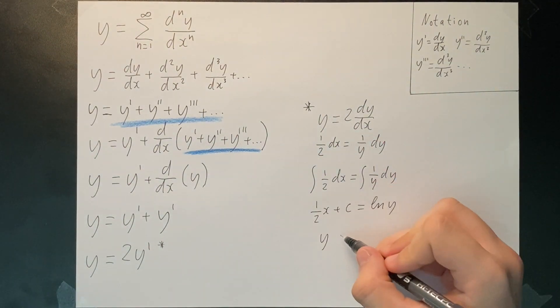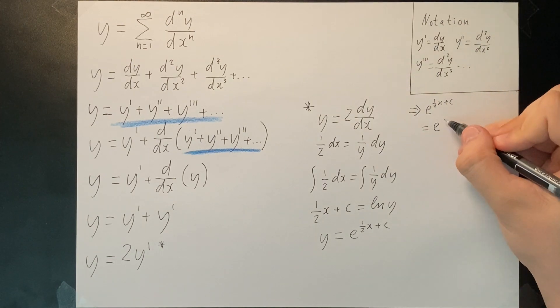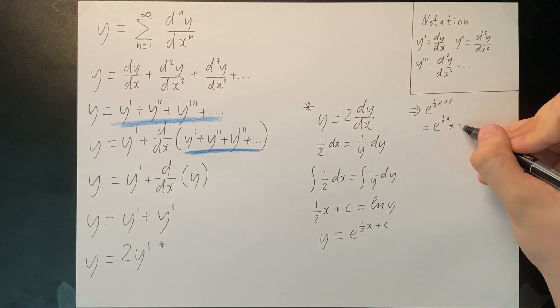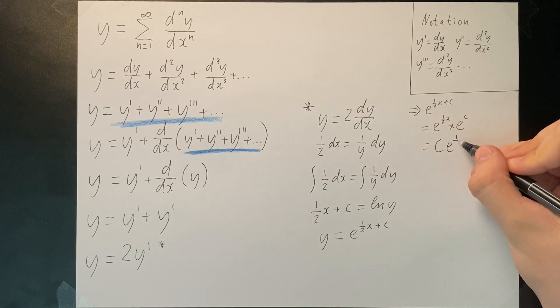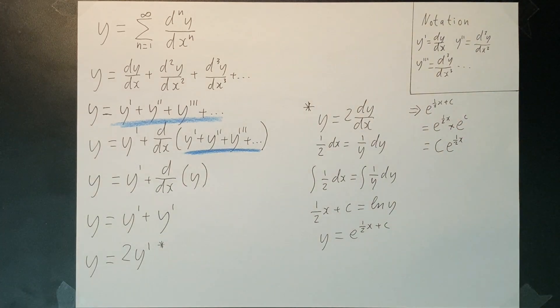Making y subject of the formula, we get the following. e to the half x plus c is the same as e to the half x times e to the c. Since e to the c is just some arbitrary constant, we can just write it as c.